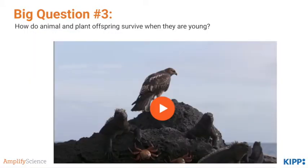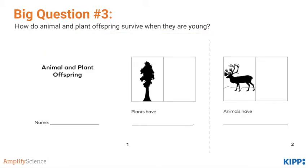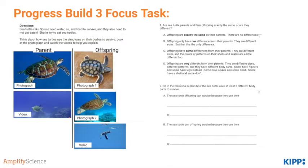Such as these clownfish that hide in sea anemones that keep them safe from predators. Students complete a mini-book to summarize their findings. By the end of these lessons, students should understand the fundamentals of Progress Build 3. Take a second to pause and read the statement carefully. This leads up to the Progress Build 3 focus task: Sea Turtle Offspring Survival, where students apply what they've learned to analyze sea turtle offspring. Pause now and do the task.